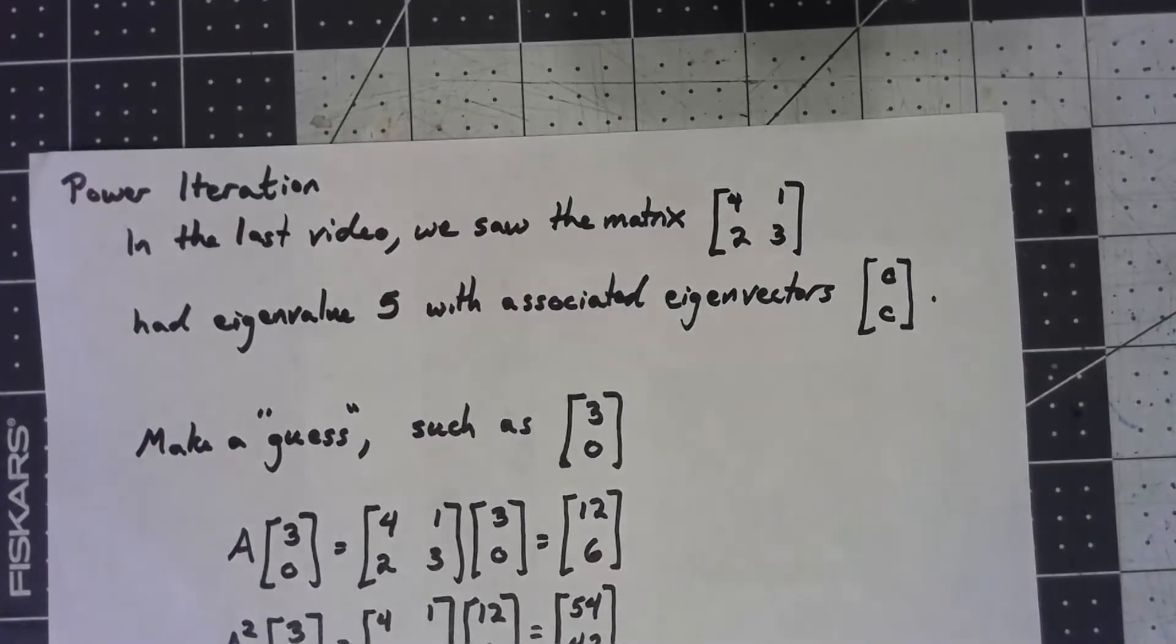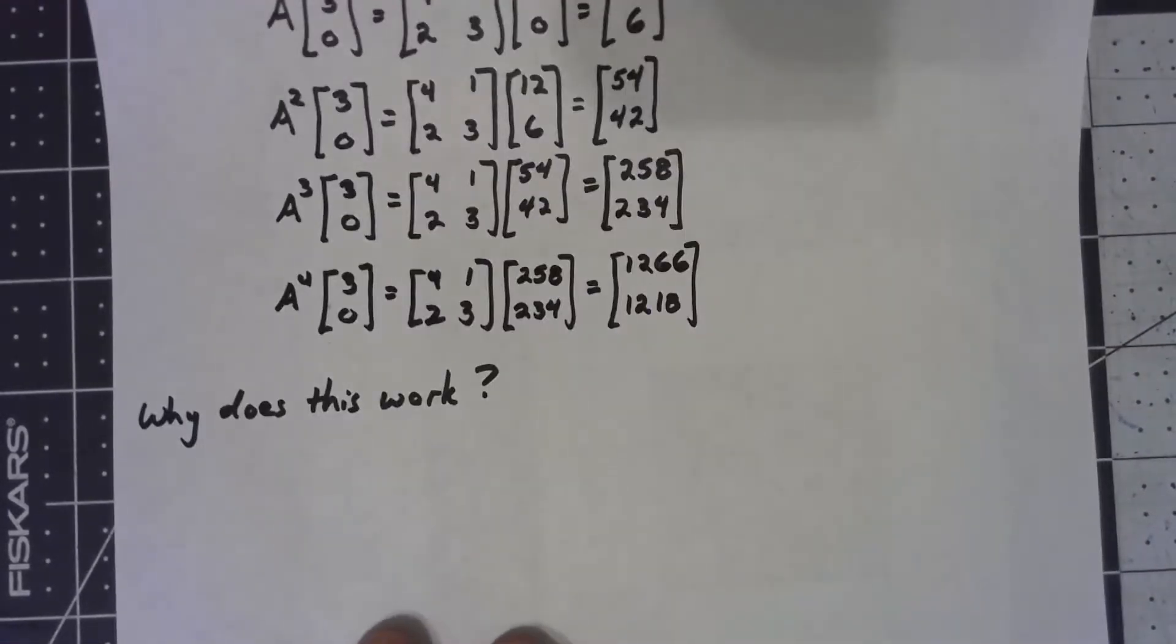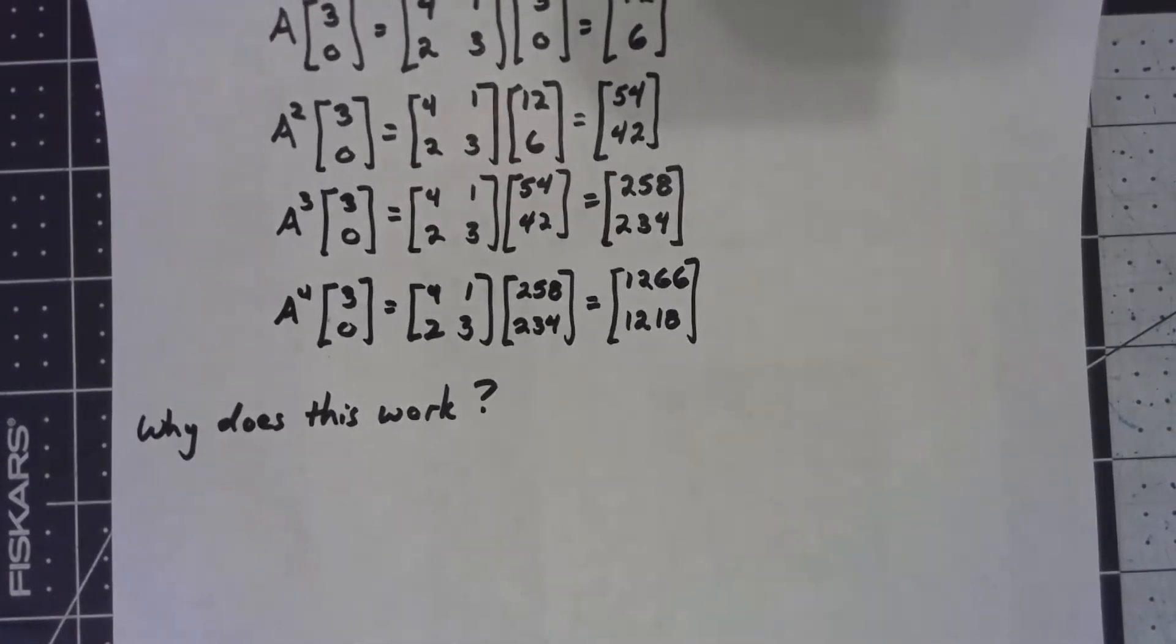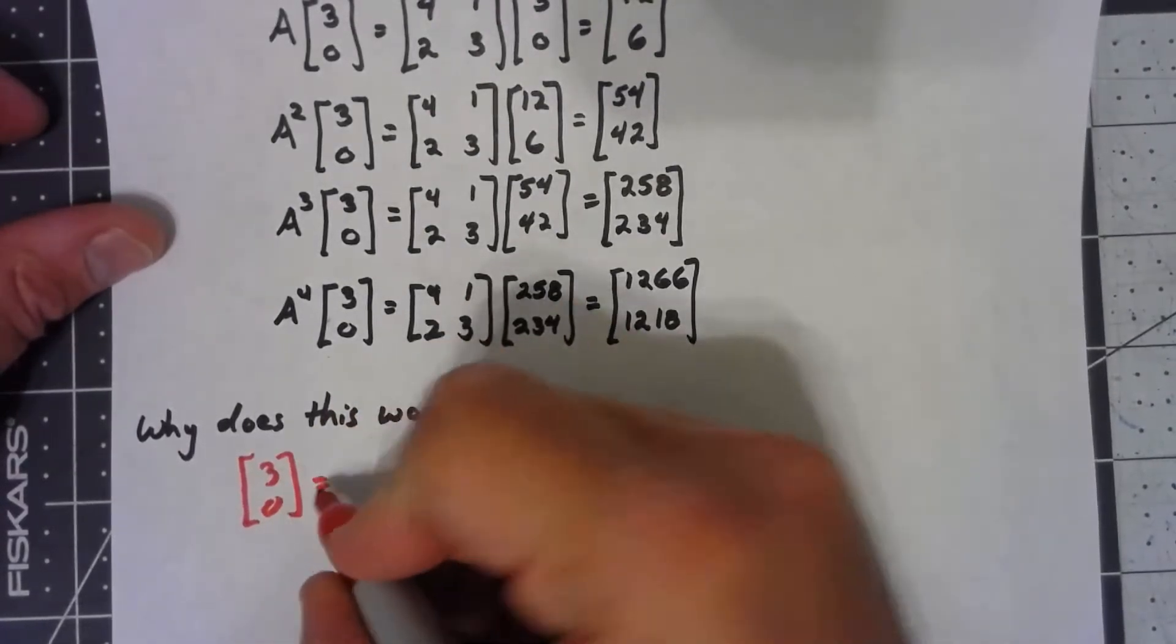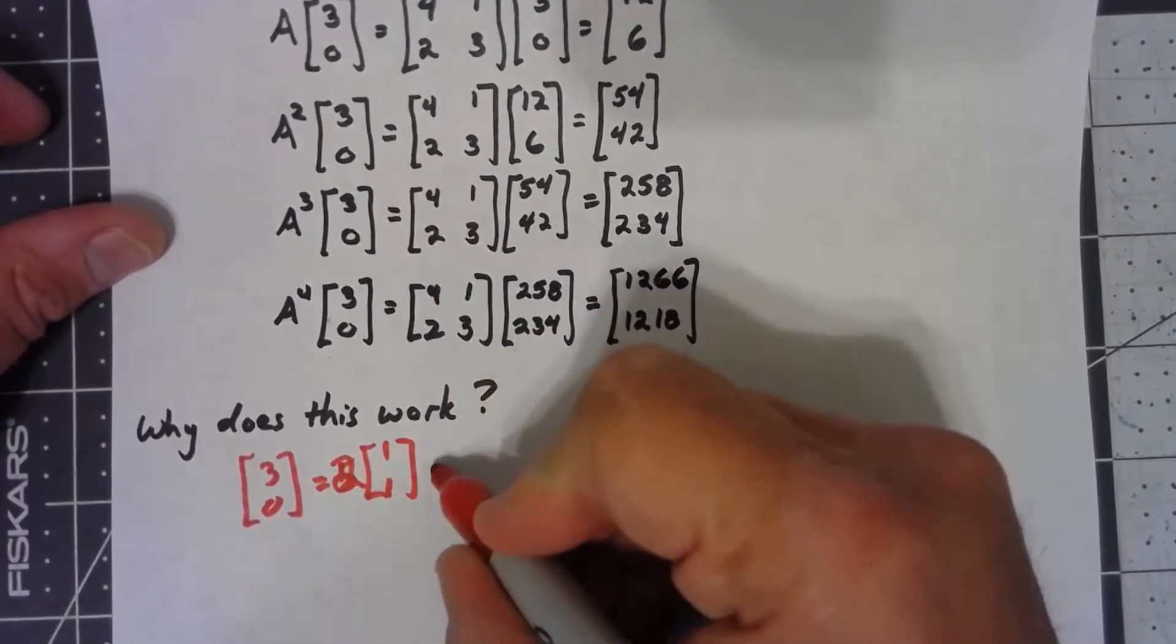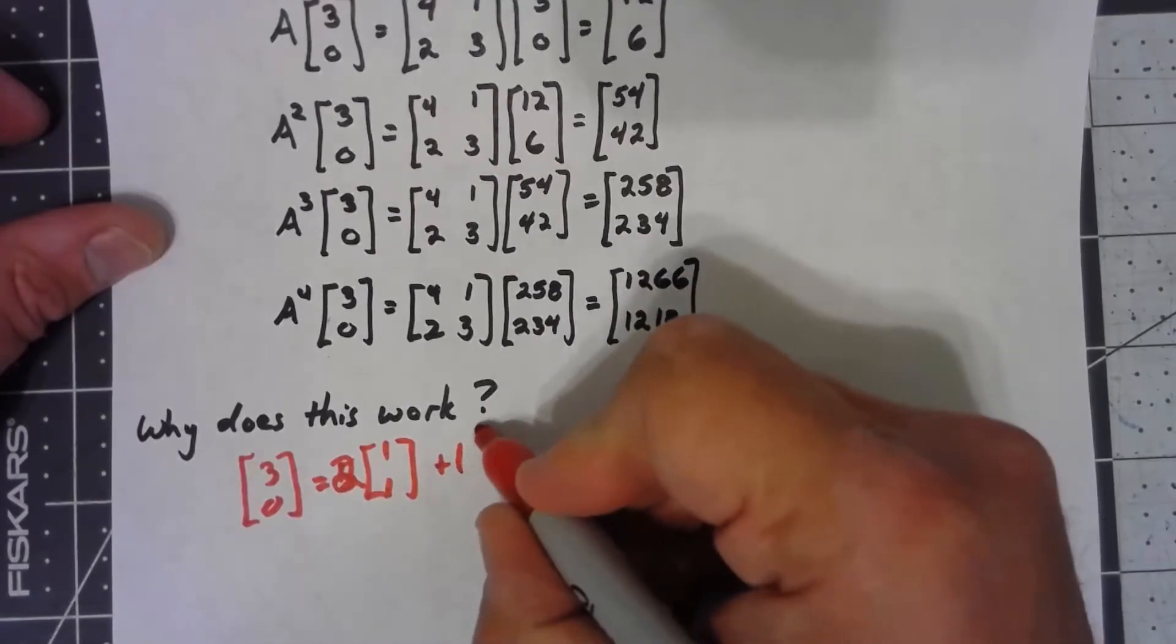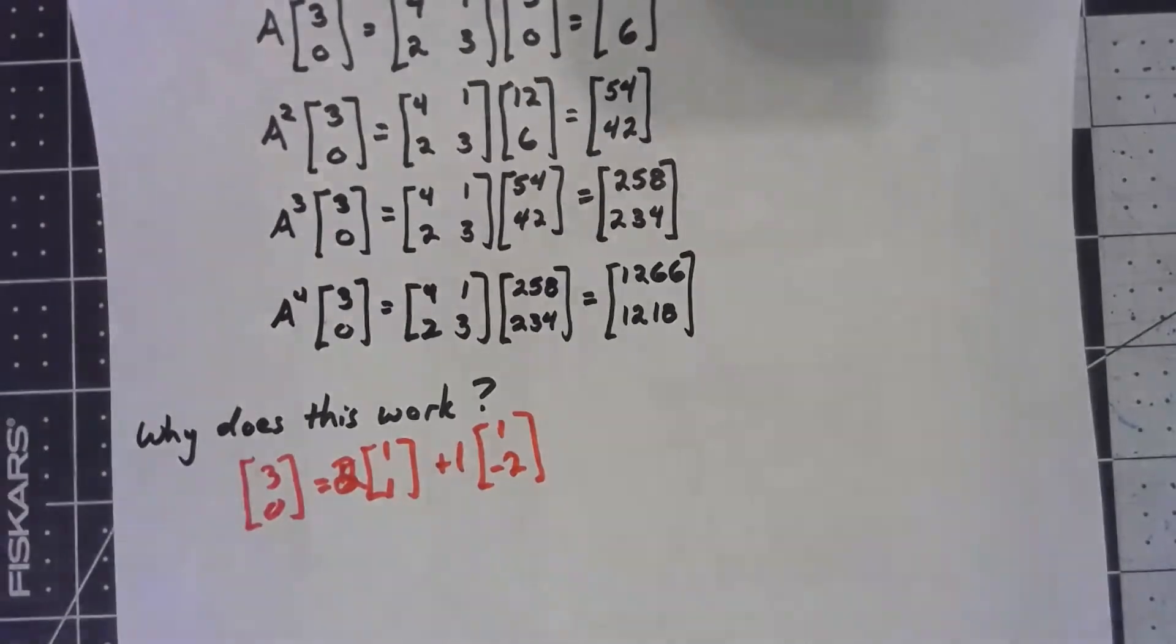So why is this doing this? Why is this happening? Well, first thing to notice is that the vector we started with, the guess [3, 0], is equal to 2 times [1, 1] plus 1 times [1, -2].